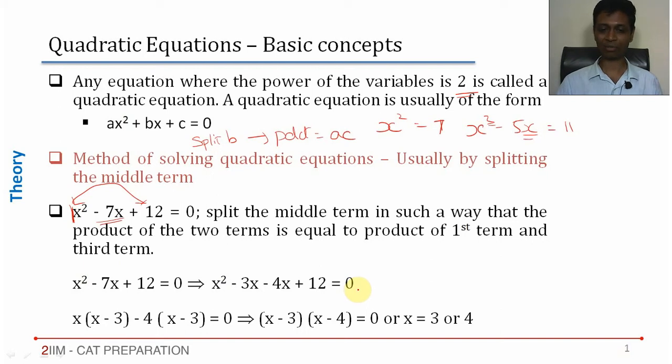Now, extract and factorize this in parts. Take out x from here: x(x - 3). Take out -4 from here: -4(x - 3). So (x - 3)(x - 4) = 0, or x = 3 or 4.